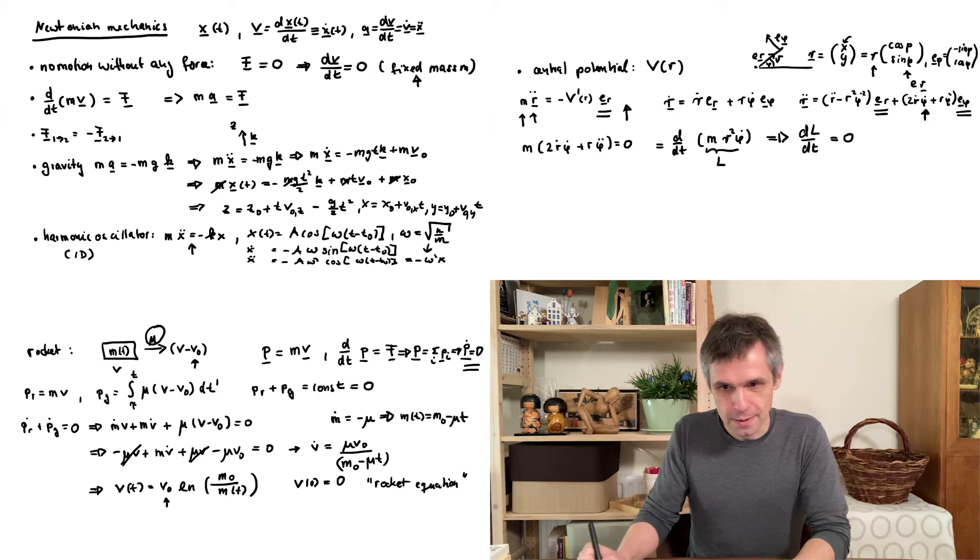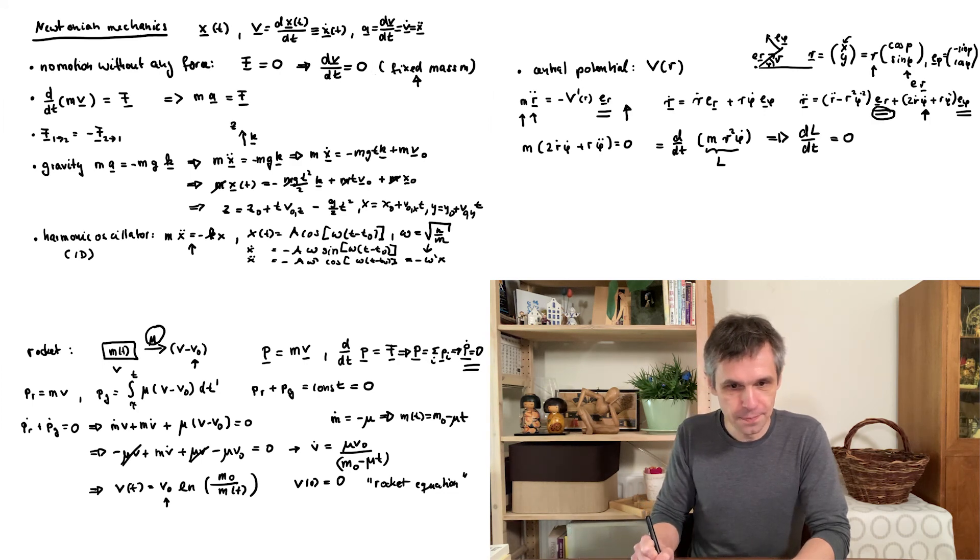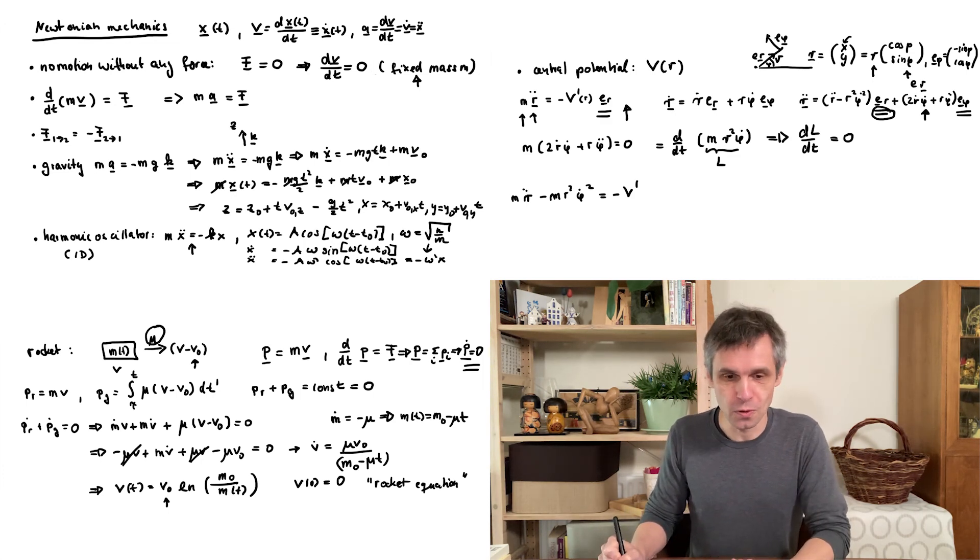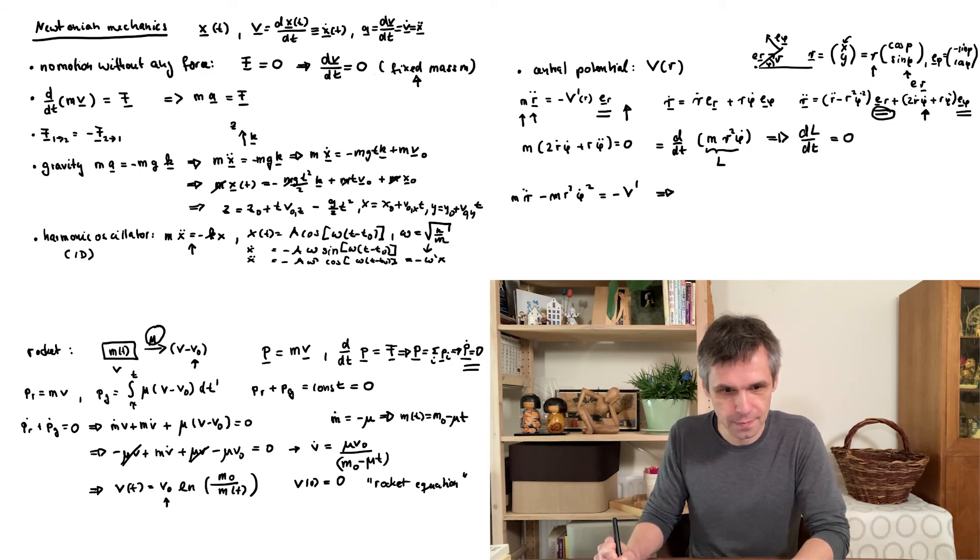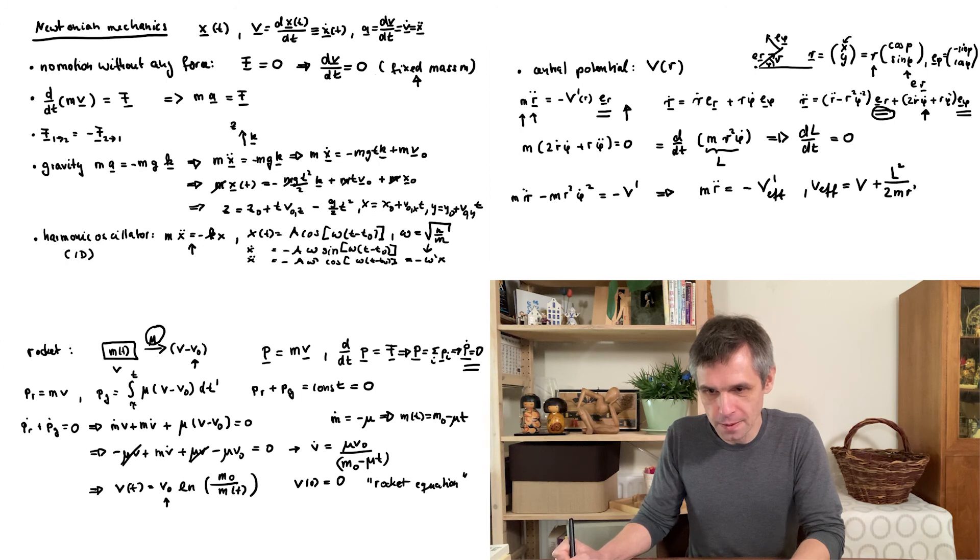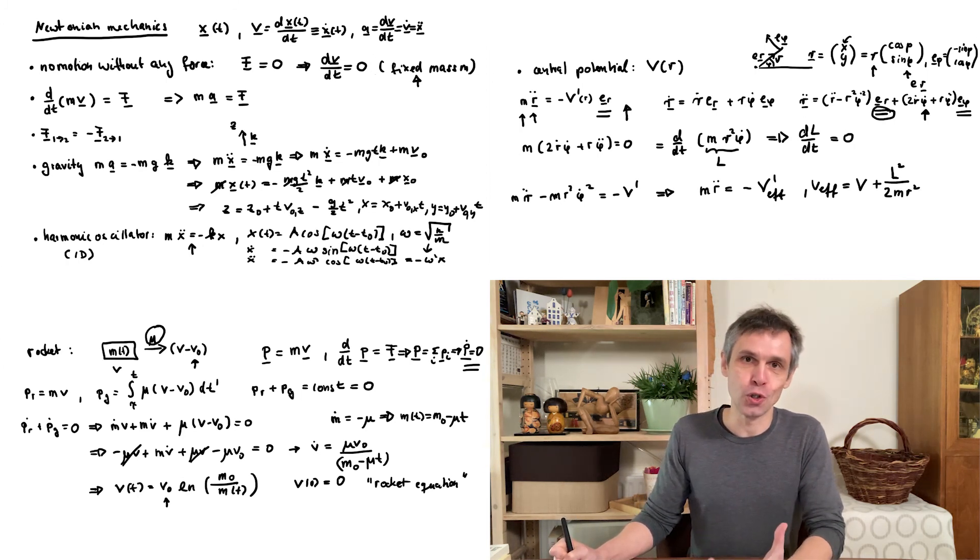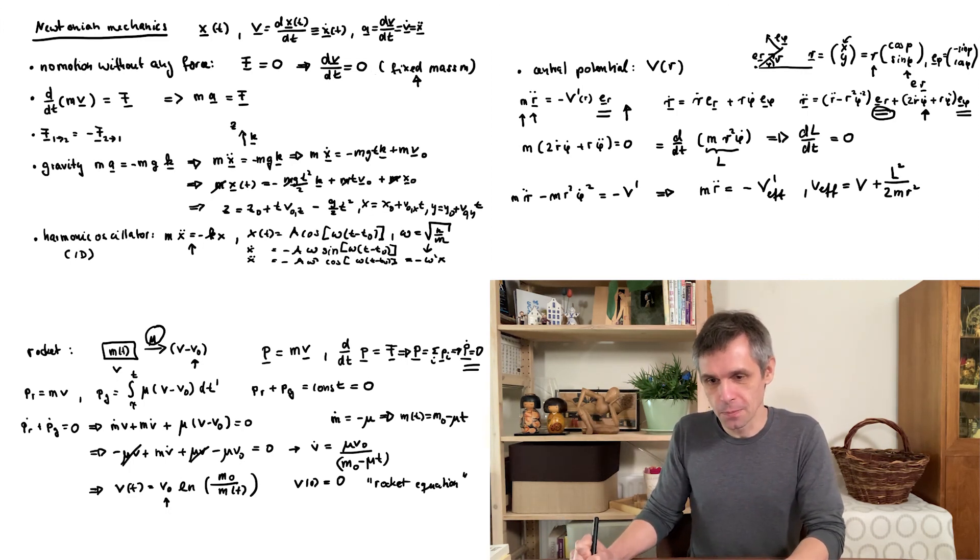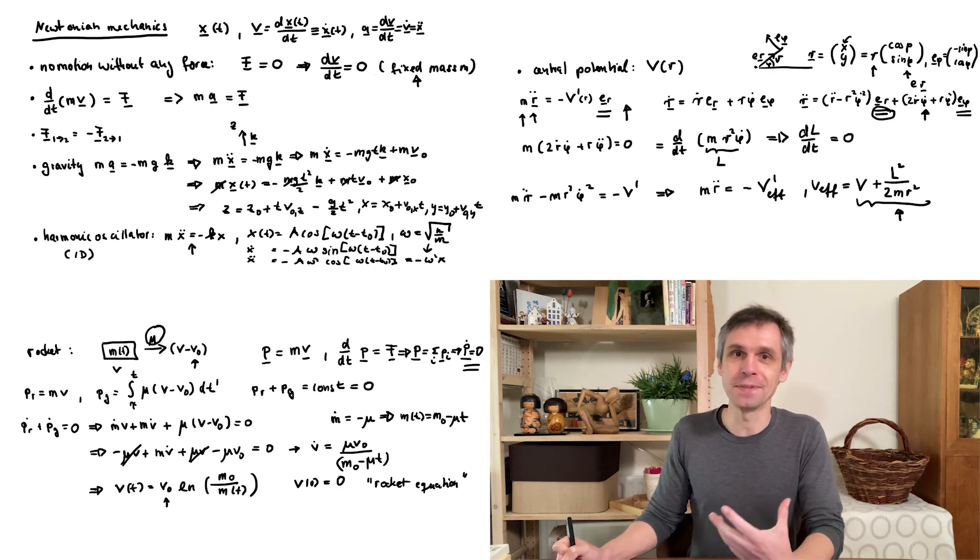And now if we look at the second equation involving this direction here, we find the following expression. And now this can be rearranged in a very useful way as a derivative of an effective potential, which is simply given as V plus l squared divided by 2m r squared. So we can reinterpret this as an equation of motion of a point particle moving in one direction, but with a modified potential with some extra forces which are known as fictitious forces.